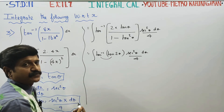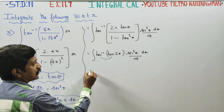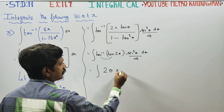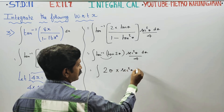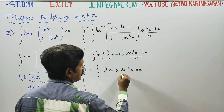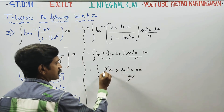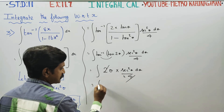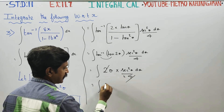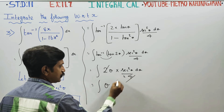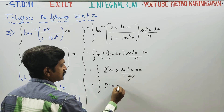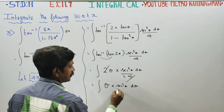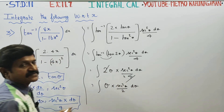Tan inverse of tan 2 theta simplifies to 2 theta. So the integral reduces to 2 theta into secant square theta d theta by 4. The 2 cancels, leaving theta into secant square theta d theta by 2.